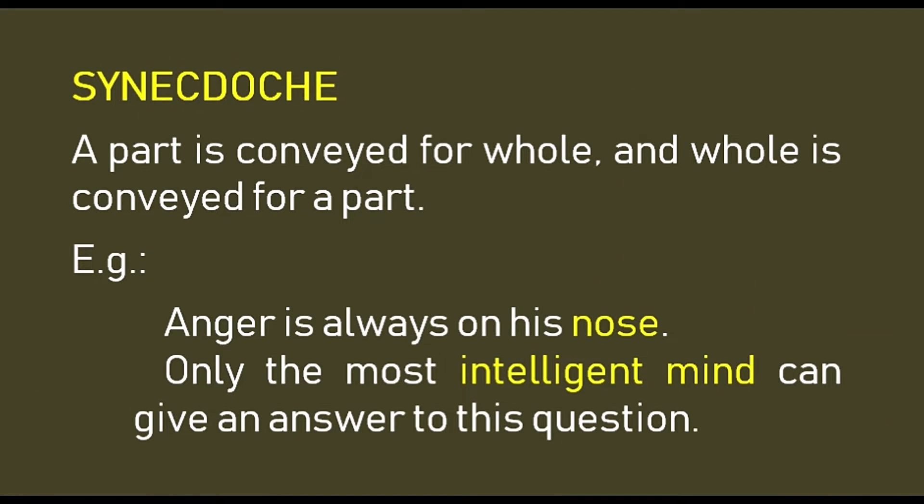Synecdoche: a part is conveyed for the whole and the whole is conveyed for a part. For example, 'anger is always on his nose' — here the whole body is represented by the nose only. Another example: 'the most intelligent mind can give an answer to this question' — here 'intelligent mind' refers to intelligent people.